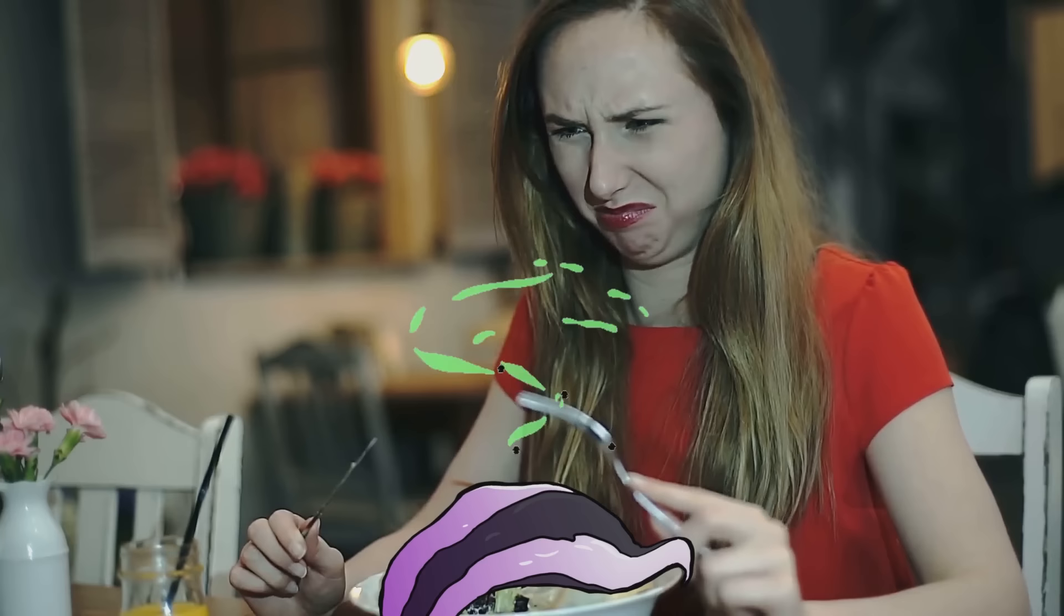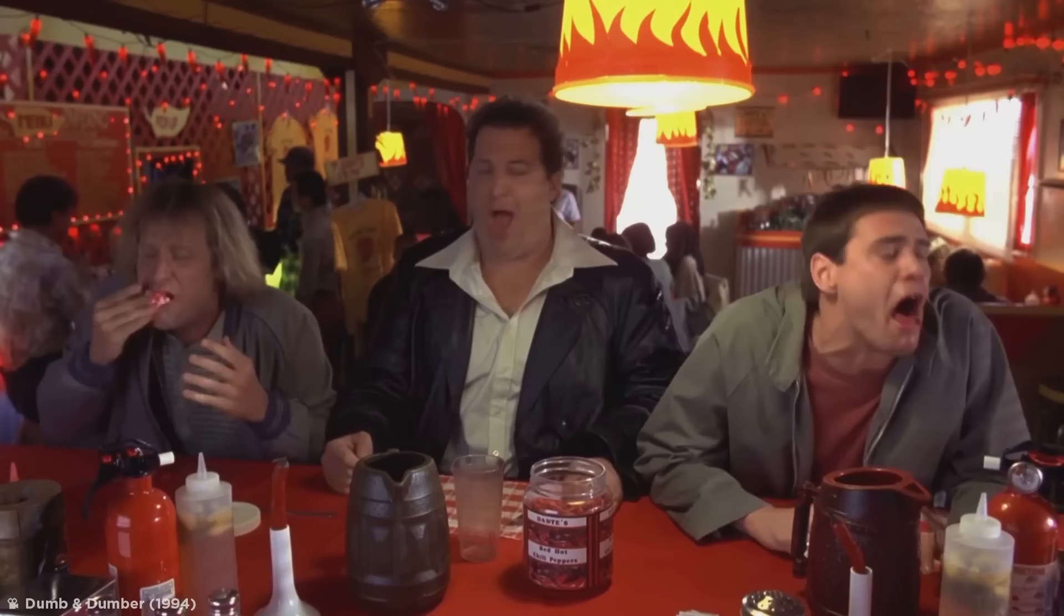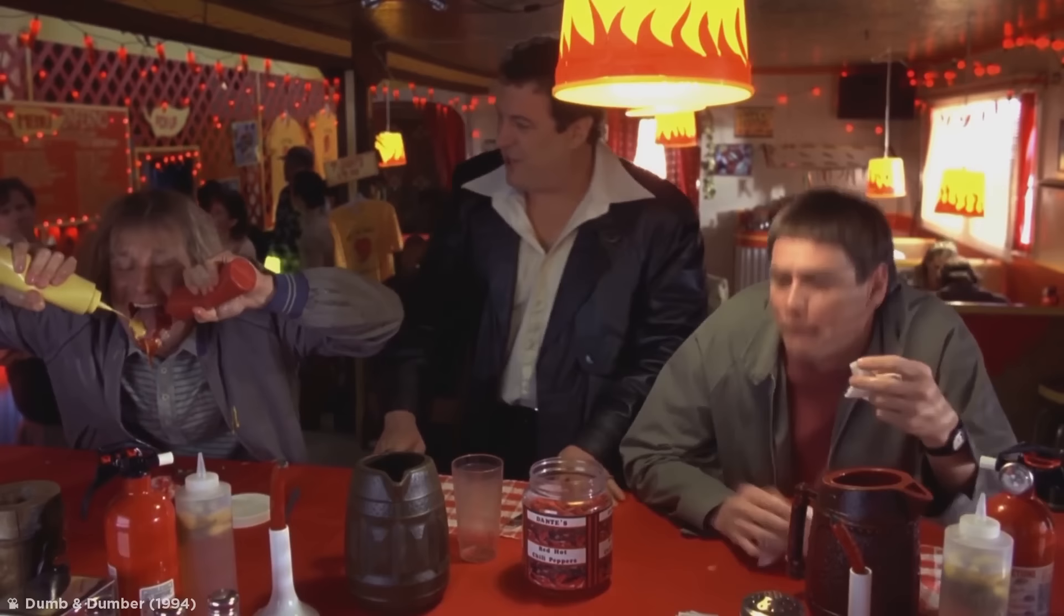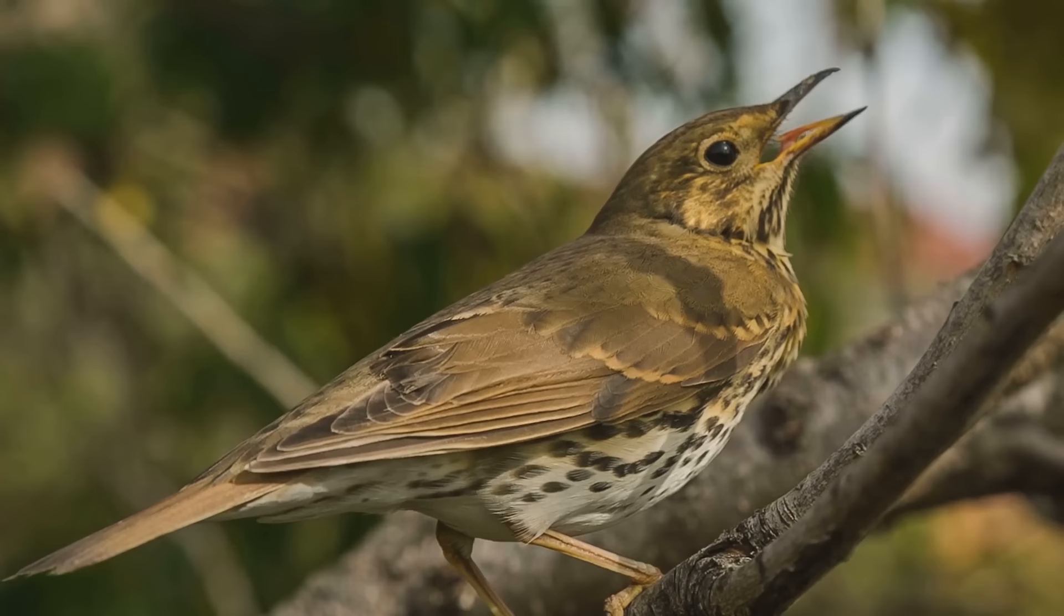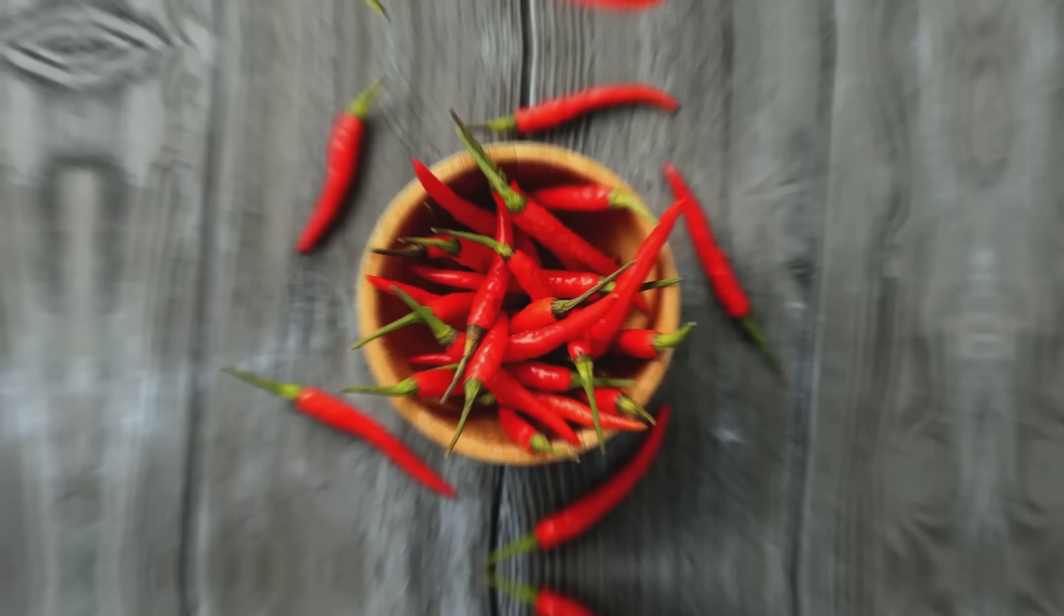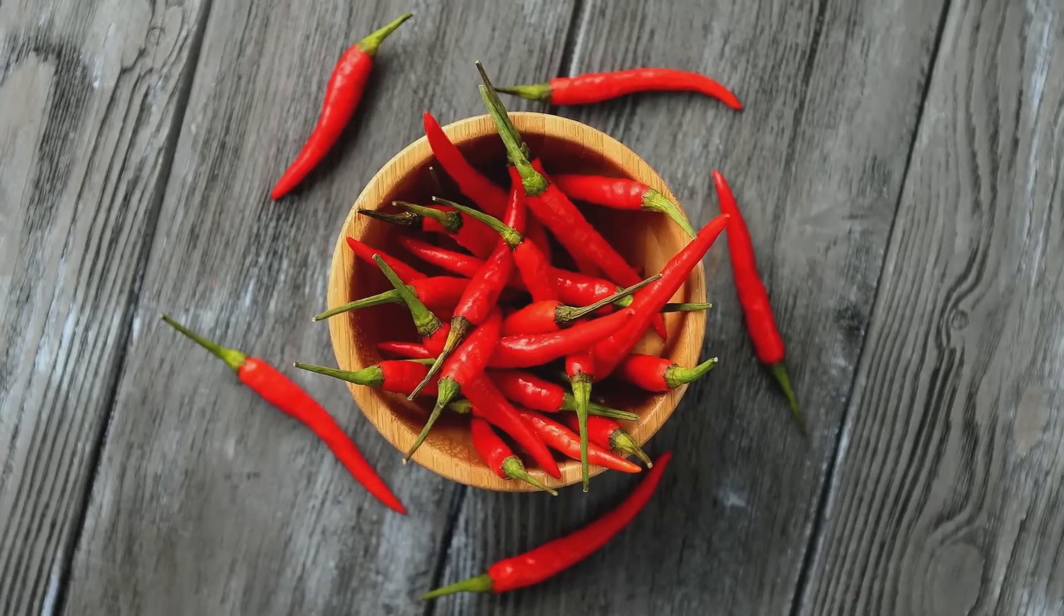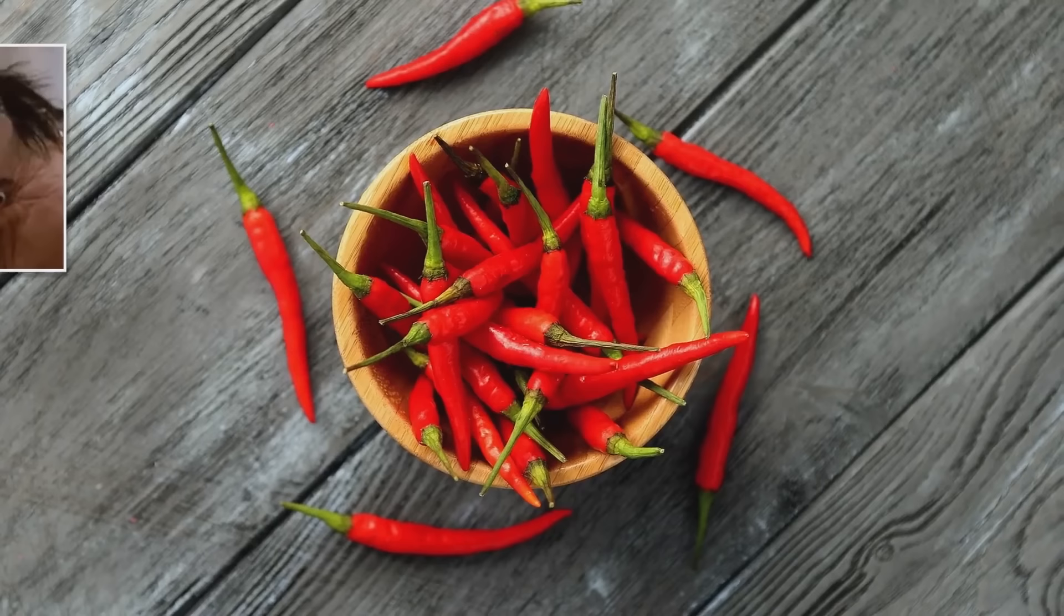Birds are immune to chili peppers. Ever eaten a hot chili pepper and felt the need to reach for the nearest glass of water or milk right away? Well, if you had feathers and wings, that wouldn't be such a problem because birds can totally take the heat. In case you didn't know, chili gets its fiery kick from capsaicin, a chemical that triggers pain receptors in our mouths, which is responsible for the burning hot sensation you experience. But why do chili peppers need to pack such a spicy punch?